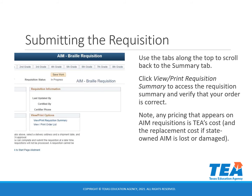Use the tabs along the top to scroll back to the summary tab before submitting your requisition. You can click 'View Print Requisition Summary' to access the requisition summary and verify that your order is correct. Please note that any pricing that appears on AIM requisitions is TEA's cost.